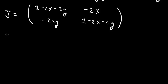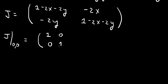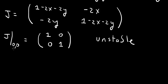Let's go one by one. The first fixed point is (0, 0). The Jacobian at (0, 0) is the identity matrix [1, 0; 0, 1]. The eigenvalues are 1 and 1. Each eigenvalue has a positive real part, so the fixed point (0, 0) is unstable.